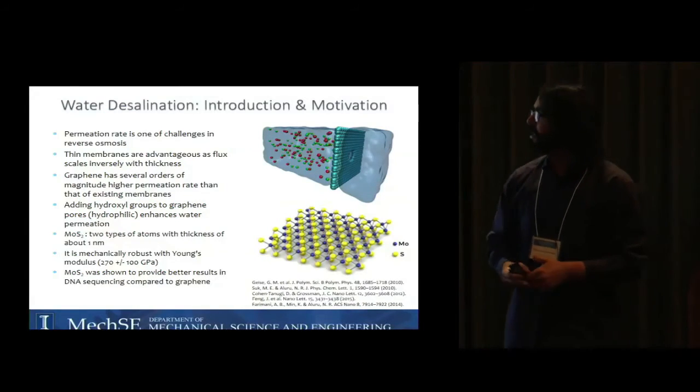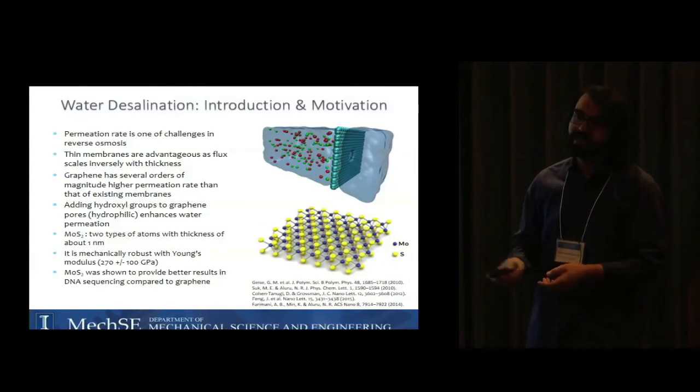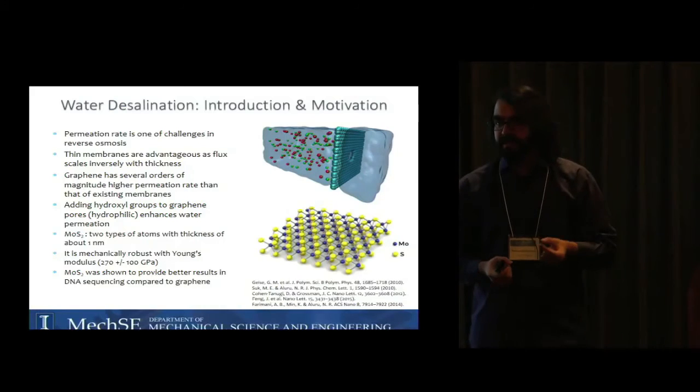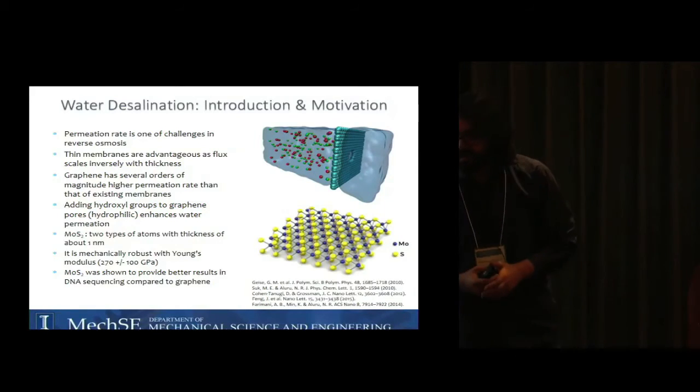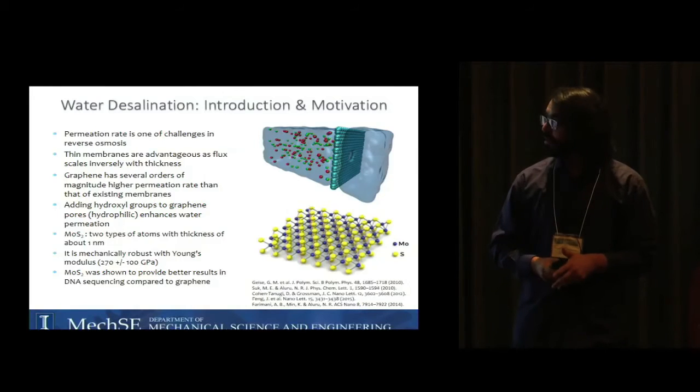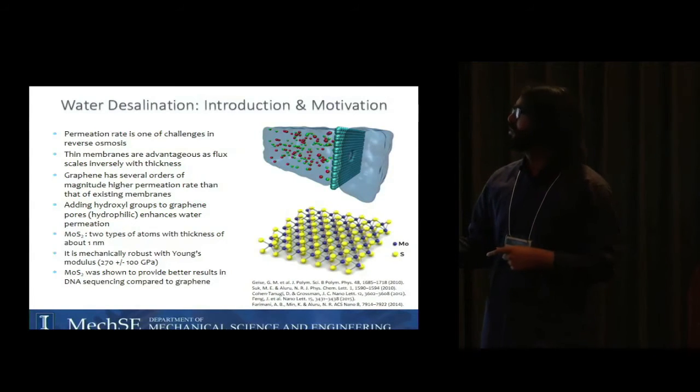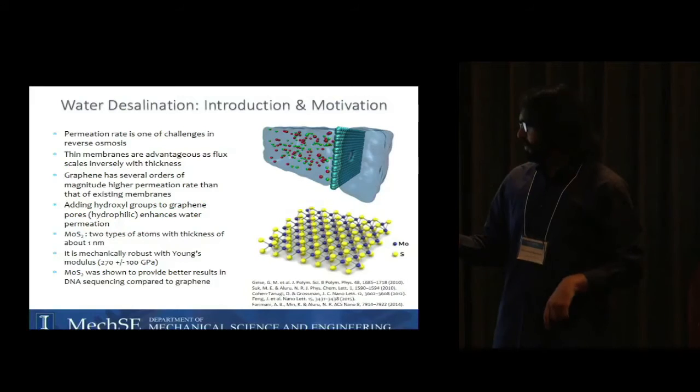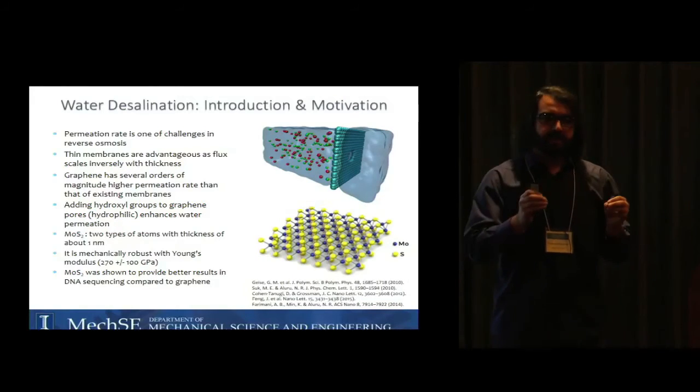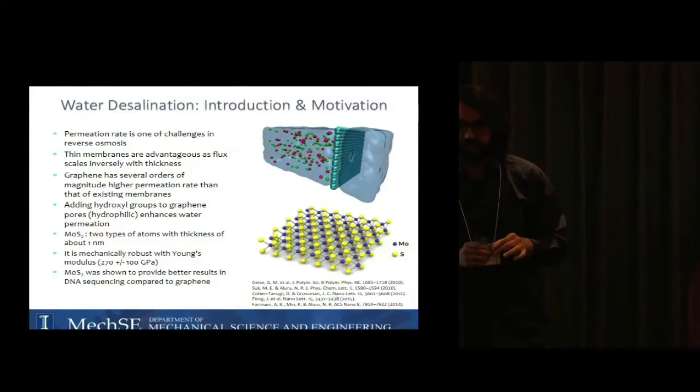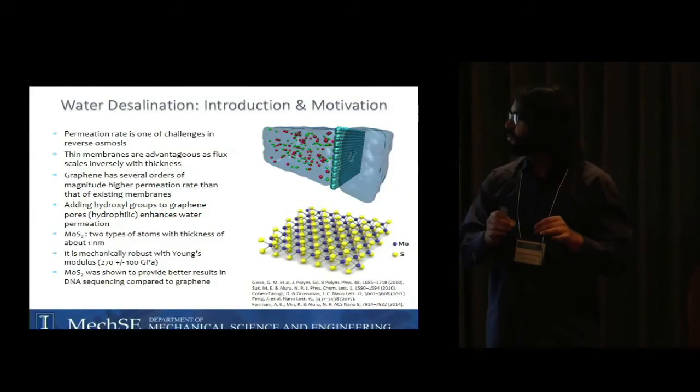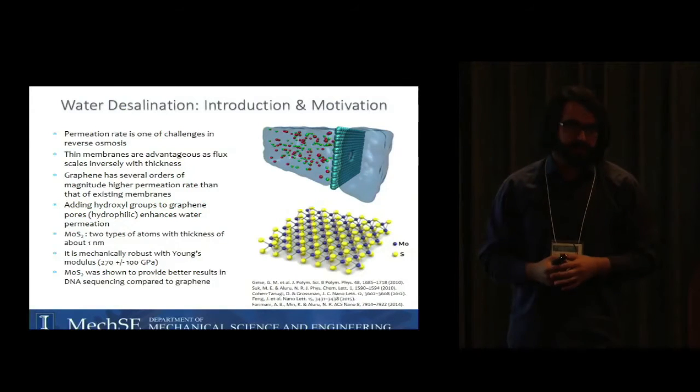One good candidate would be graphene because it's just one atom thick and we should expect very high transport rate of water. People have worked on graphene extensively and showed we can get very high permeation rates. Two or three years ago at MIT they showed that if you add hydrophilic groups to the edge of the nanopore like hydroxyl groups, you can get even higher permeation rate.